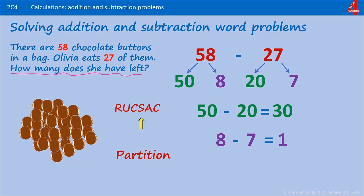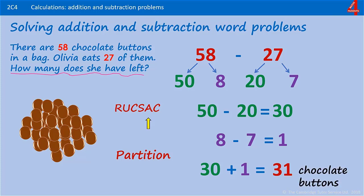This bit sometimes gets a bit confusing. Because you are taking away, the temptation is to say this is 30 take away 1. But you are actually adding these together — you are finding out how many you have left. 30 add 1 gives you 31. Have you answered the question?